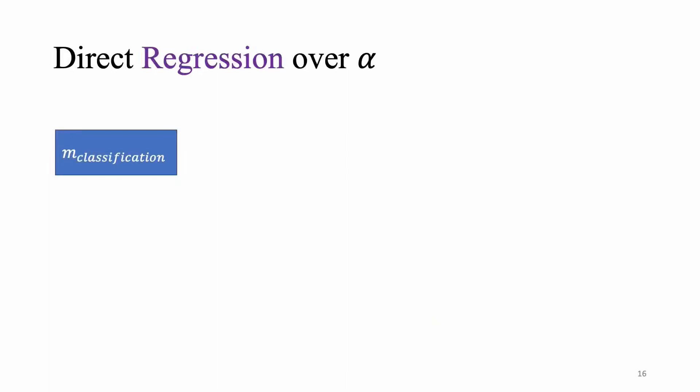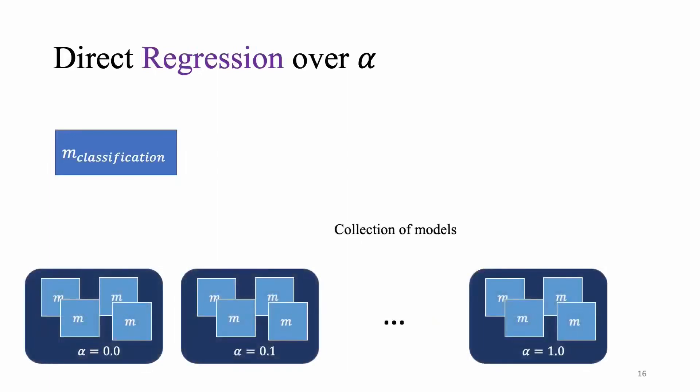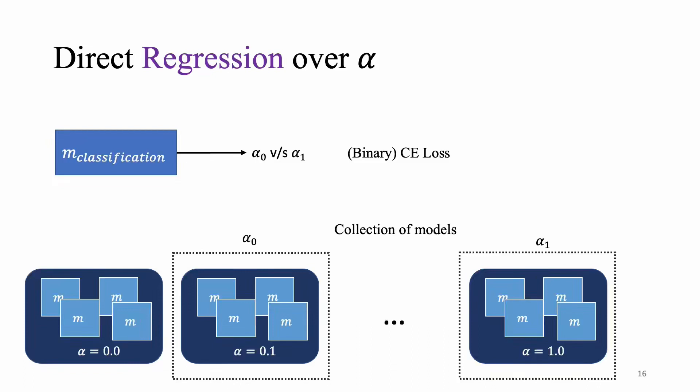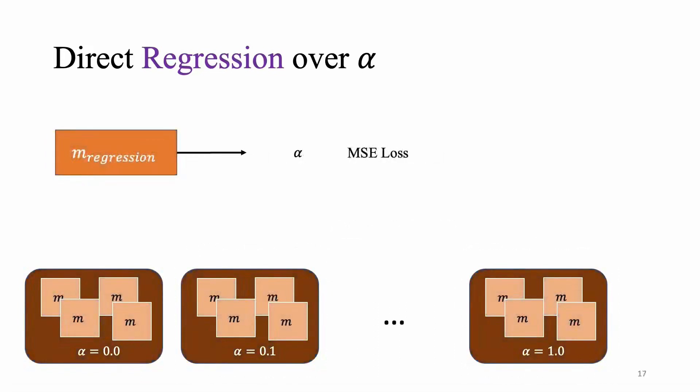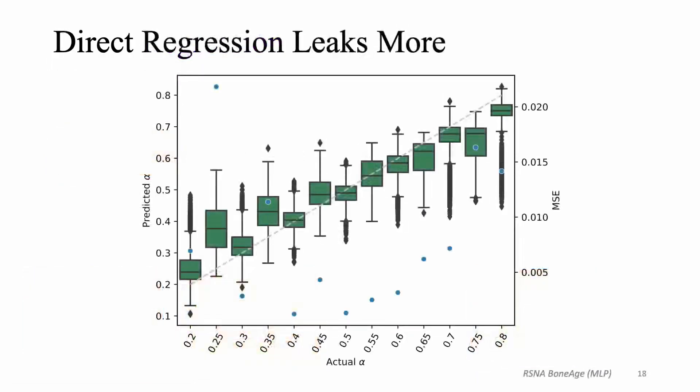Now all of the settings that we looked at in the experiment so far consider these different possible alpha values, and then we pick any two of them and then we try to perform this binary kind of distinguishing task, which is useful to try and understand what the distribution inference risk is, but it's not very practical. The more practical useful setting would be one where the adversary could directly look at the models and predict what the alpha value would be. And we tried this setting for our data sets, and what we see here is that the inference risk for this direct regression is much higher than classification. So for context the dashed gray line here is what you would get for perfectly predicting. The x-axis is the actual alpha values for the models that we test on and the y-axis is what the attacks predict.